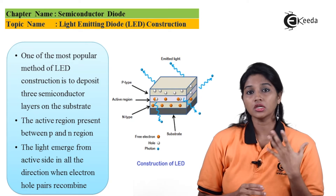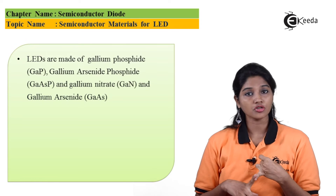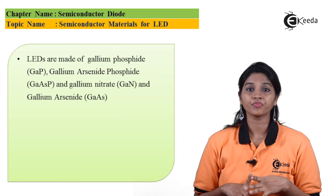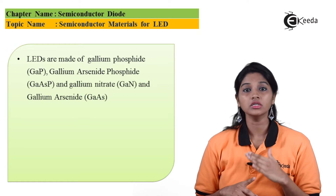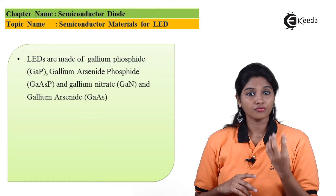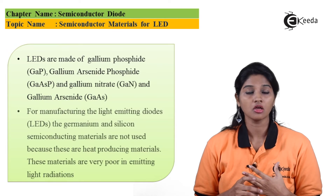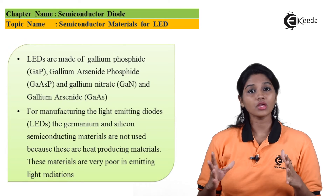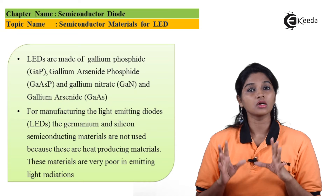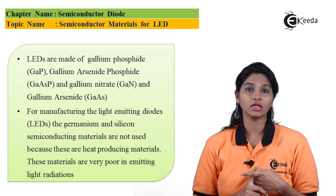There are various materials that we can use for the construction of LED. The various materials are gallium phosphide, gallium arsenide, gallium arsenide phosphide, and gallium nitrate. Mostly for manufacturing of LED we cannot use germanium and silicon, because these semiconducting materials produce heat and have very less capability to produce light. So for most applications, the mostly used semiconductor materials are gallium arsenide, gallium arsenide phosphide, gallium phosphide, and gallium nitrate.